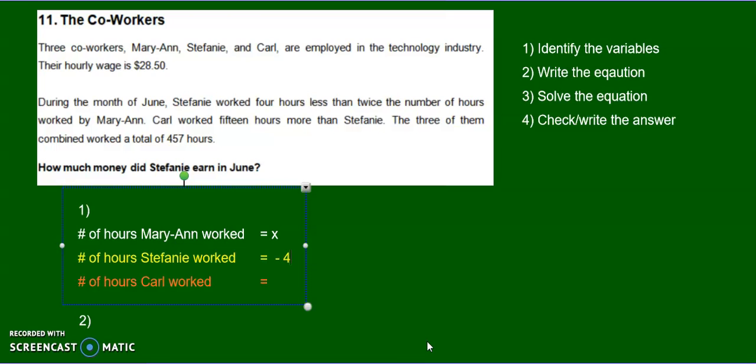Then twice, twice the amount of hours that Marianne worked. Well, how much did Marianne work? She worked x. So 2x. So it's four less than 2x.